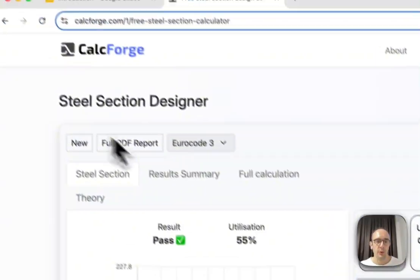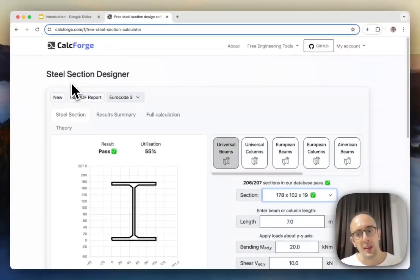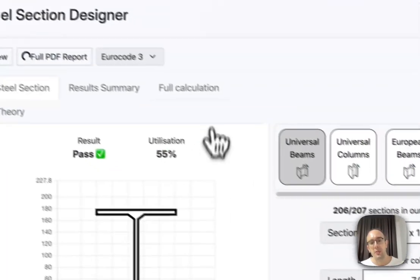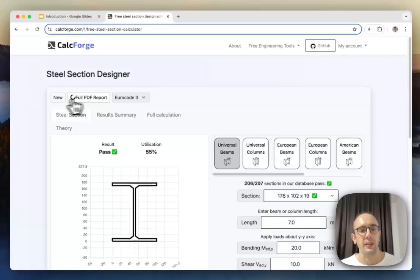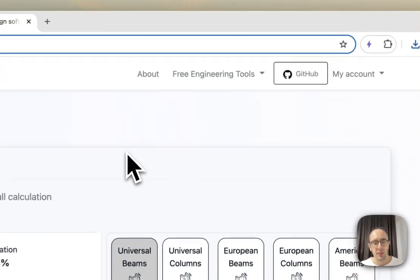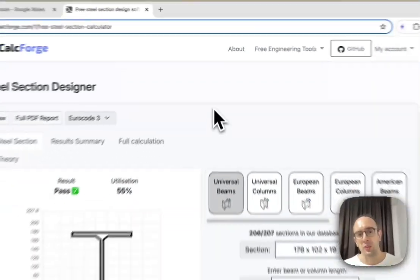So all of this calculations done automatically for you each time you run or you select a different steel section. So I do encourage you to check out this software if you do have a steel design problem and you can also then download this full report. Everything you see here is a PDF by clicking this full PDF report button. And that's everything I wanted to show you and now moving on to the theory.